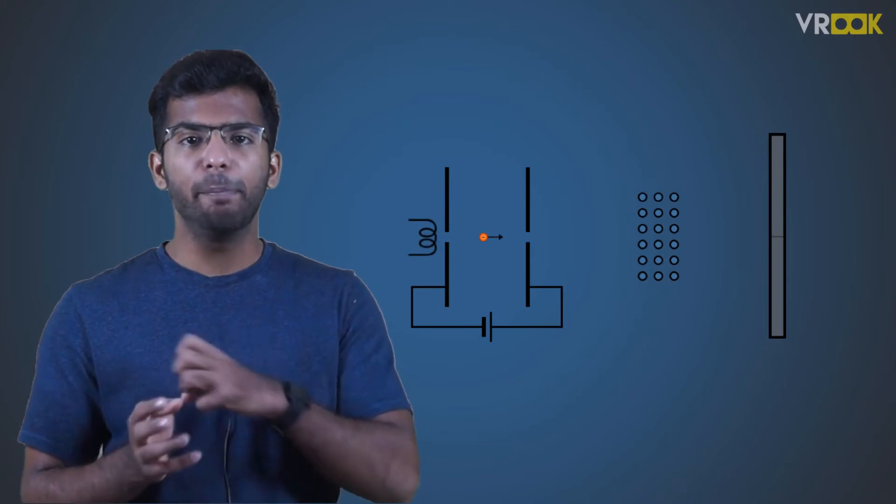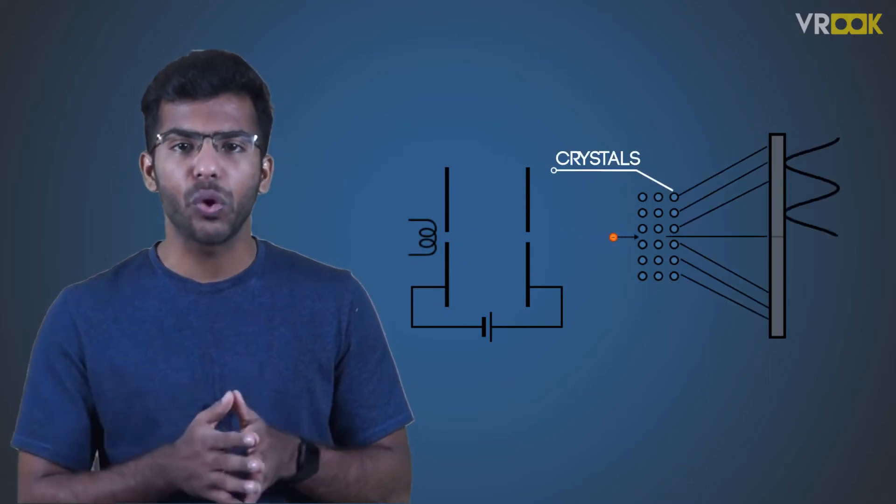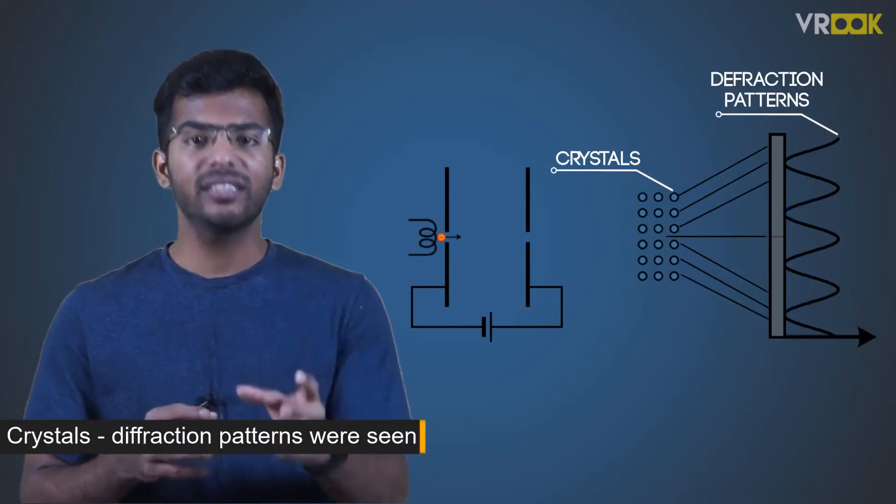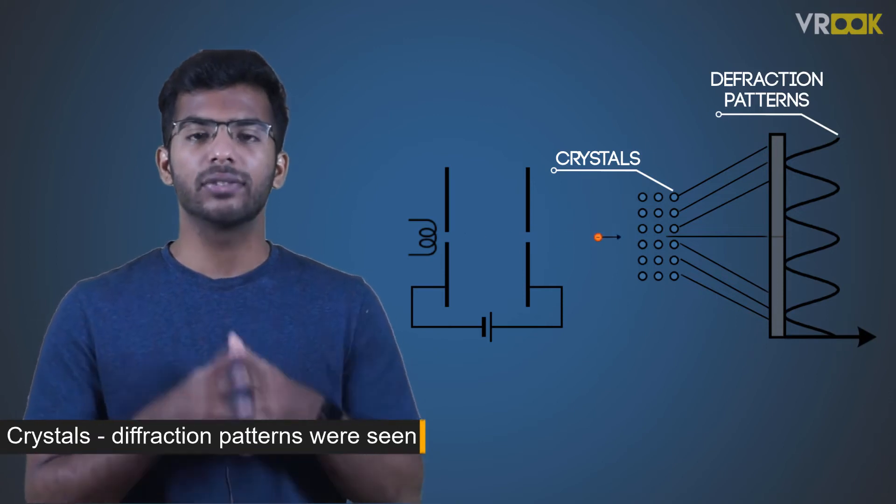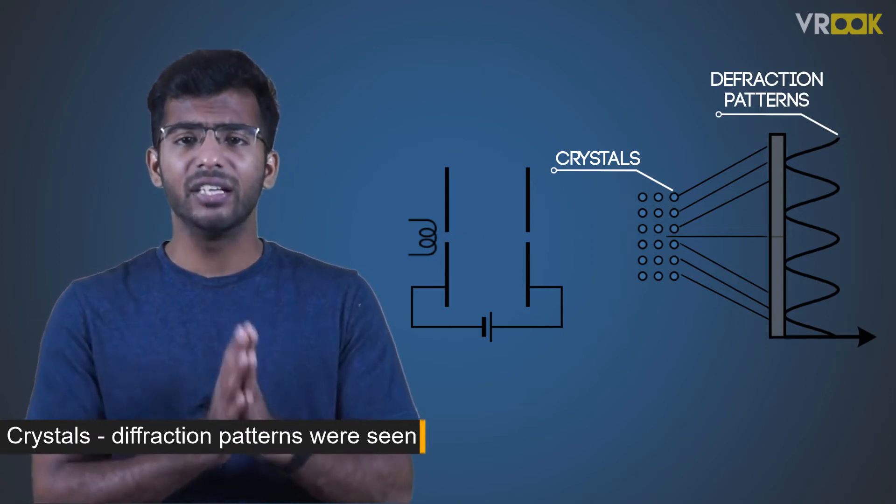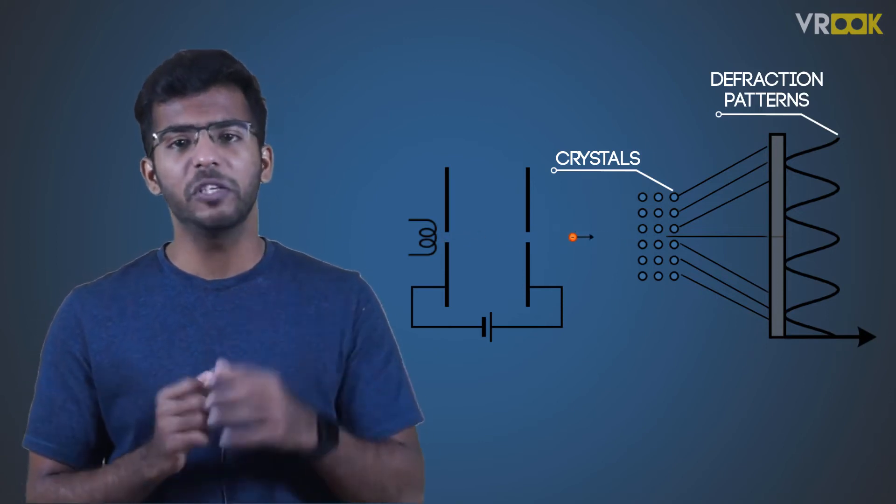De Broglie's prediction was shown to be true when beams of electrons and neutrons were directed at crystals and diffraction patterns were seen. This is evidence of the wave properties of these particles. Wave-particle duality is not confined to light.